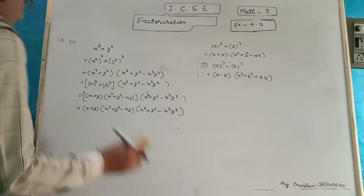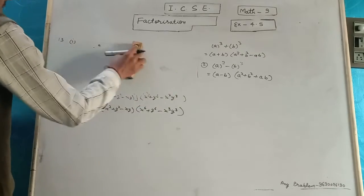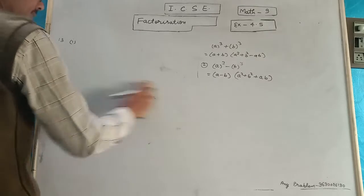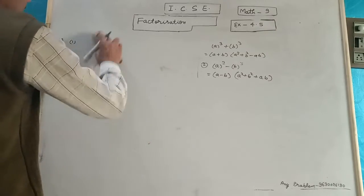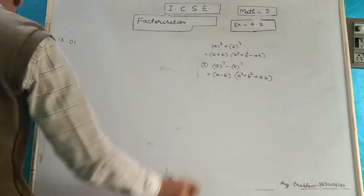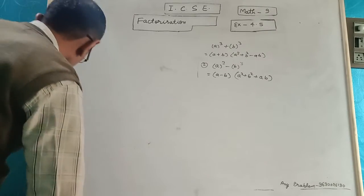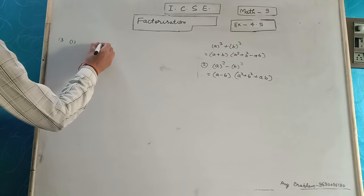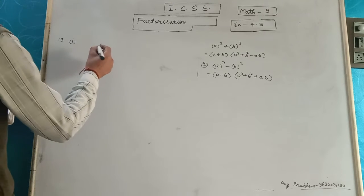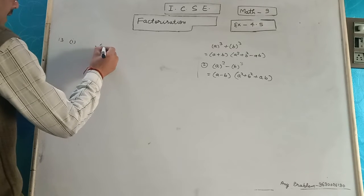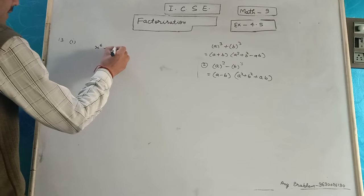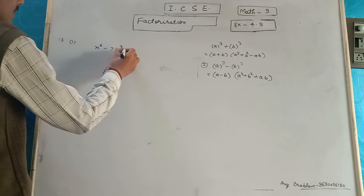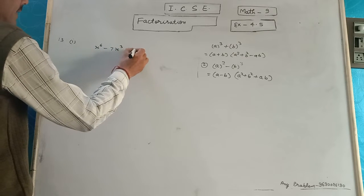2nd part is the 13th question, 2nd part. The expression is x to the 6th power minus 7x cube minus 8.